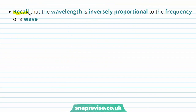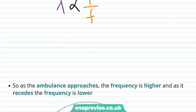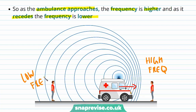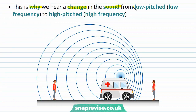We can relate this to frequency by recalling that wavelength is inversely proportional to the frequency of a wave — wavelength is proportional to one over the frequency. Because of this inverse relationship, as the ambulance approaches the frequency is going to be higher, and as it recedes the frequency is lower. So for the observer that the ambulance is moving towards the frequency is high, whereas for the observer the ambulance is moving away from the frequency is low. This explains why we hear a change in sound from low pitched (low frequency) to high pitched (high frequency).